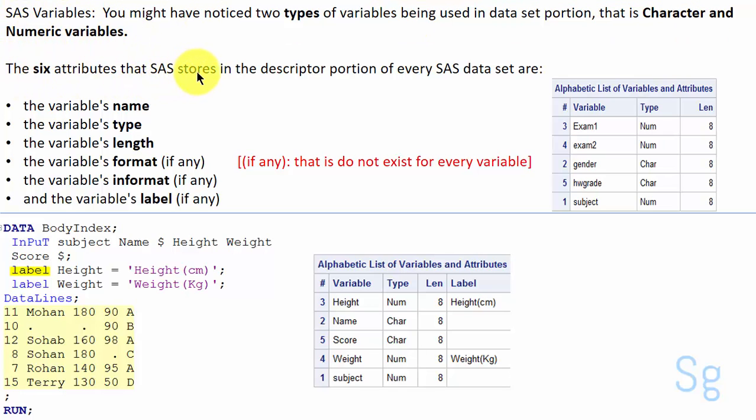The six attributes that SAS stores in the descriptive portion of every SAS data set are: the variable's name, the variable's type, the variable's length, the variable's format, the variable's informat and the variable's label. As you can see it is mandatory to have these first three attributes whereas the next three are optional.